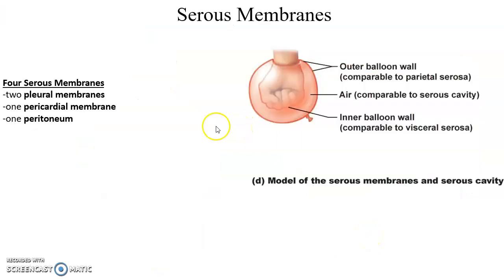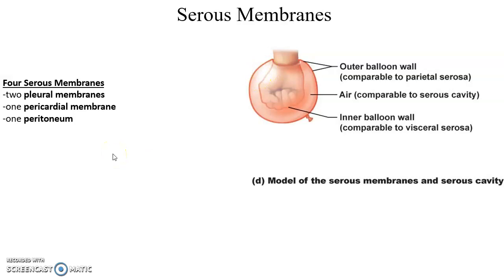Serous membranes are the category of membranes that the pleural membranes, pericardial membrane, and also the peritoneum in the abdominal cavity fall under. Serous membranes have two layers: a visceral layer that lies on the organ, and a parietal layer that makes contact with whatever is surrounding the organ. There is a thin space between the two layers filled with serous fluid. Serous membranes help protect organs by reducing friction as they constantly move — expanding and contracting for the lungs, beating for the heart, and so on.